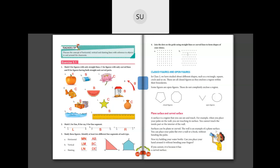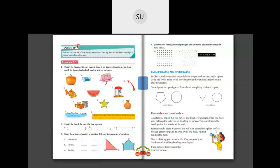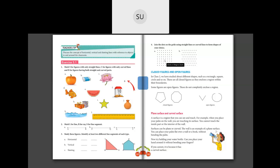Question four: join the dots on the grids using straight lines or curved lines to form shapes of your choice. You can make a rectangle, a square, a triangle, or any shape you want by joining these dots, using either straight or curved lines. Do question four for homework. We'll continue in the next class with closed and open figures. Thank you, students.